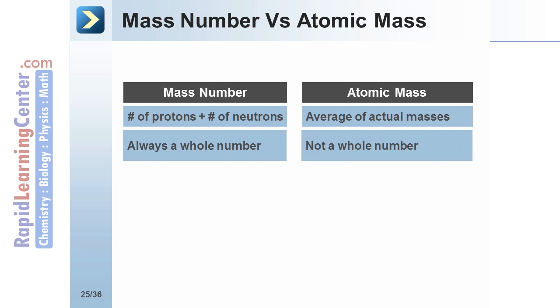Since the mass number is the sum of particles, it will always be a whole number. The atomic mass is not a whole number, as it is an average of all of the isotopes represented in nature.